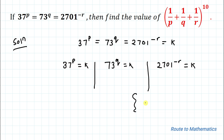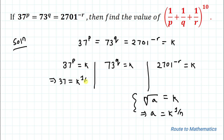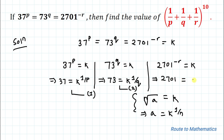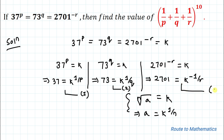We know an exponential rule: if the nth root of a equals k, then we can write a = k^(1/n). Applying this rule, we get 37 = k^(1/p) — let's call this equation 1. Similarly, 73 = k^(1/q) — equation 2. And 2701 = k^(−1/r) — equation 3.